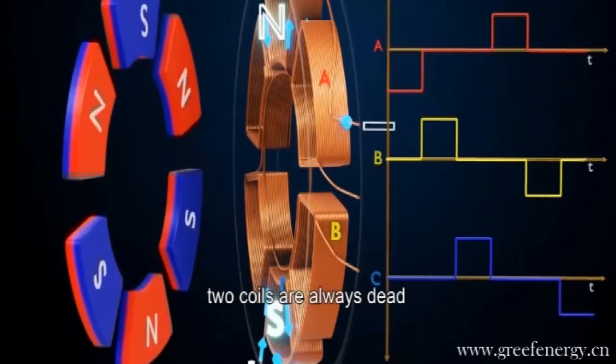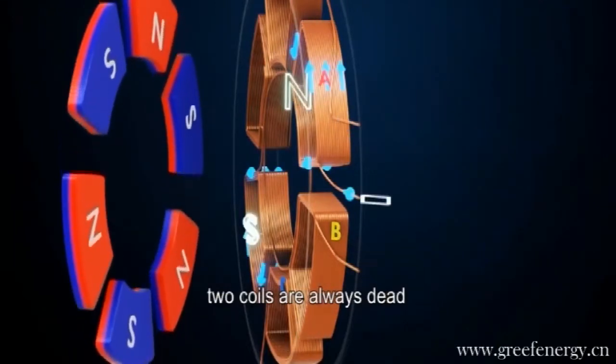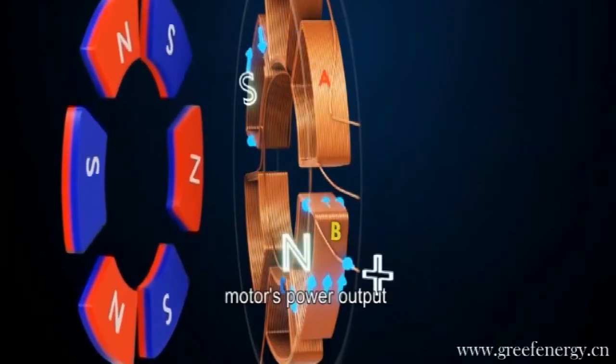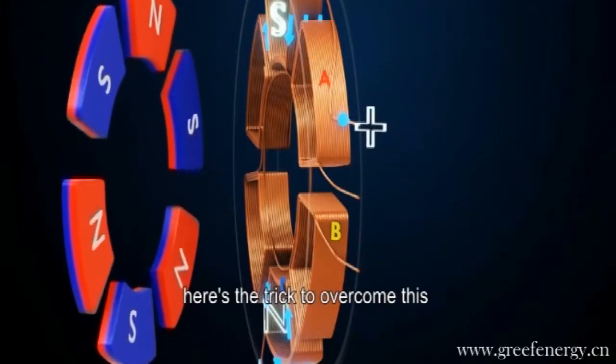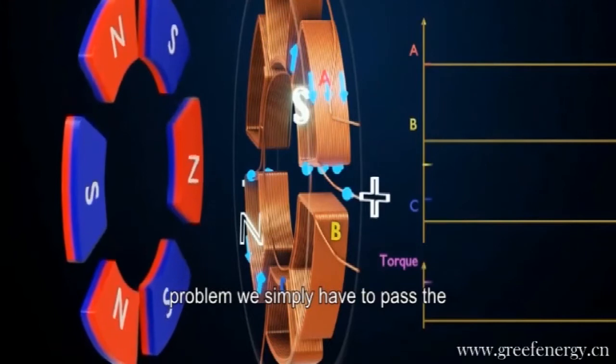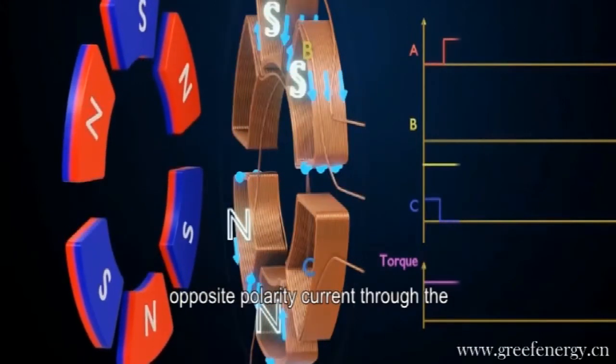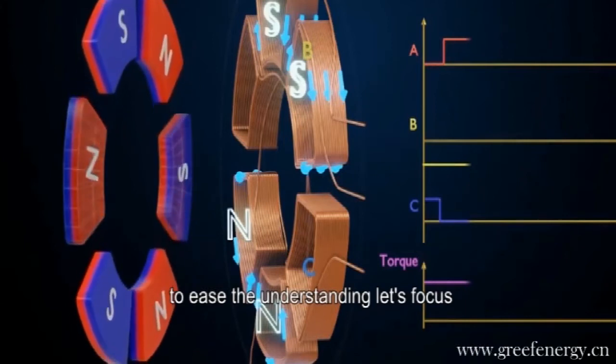However, in this operation, you can see two coils are always dead. These coils drastically reduce the motor's power output. Here's the trick to overcome this problem. We simply have to pass the opposite polarity current through the second coil.